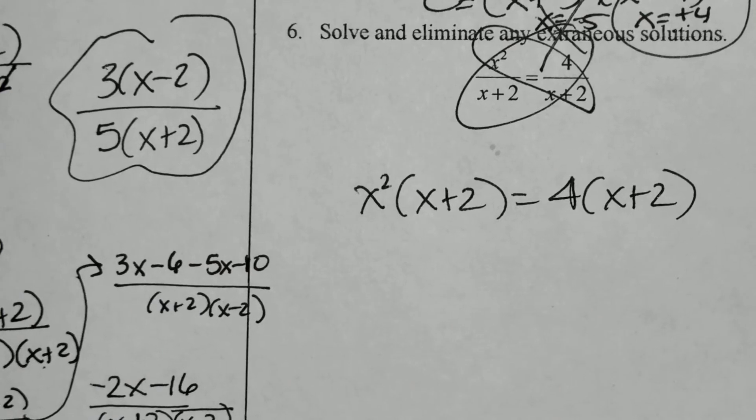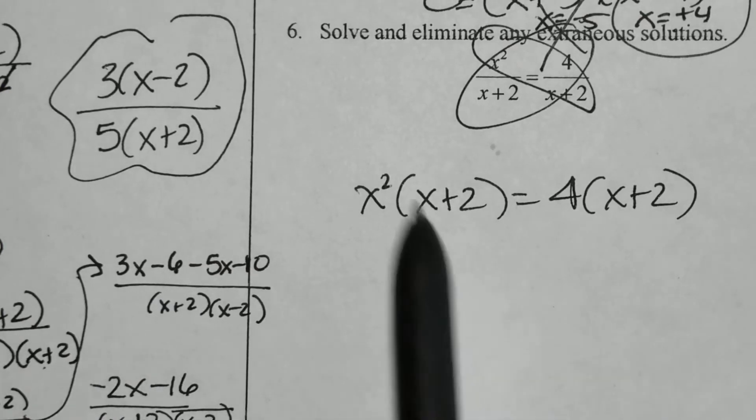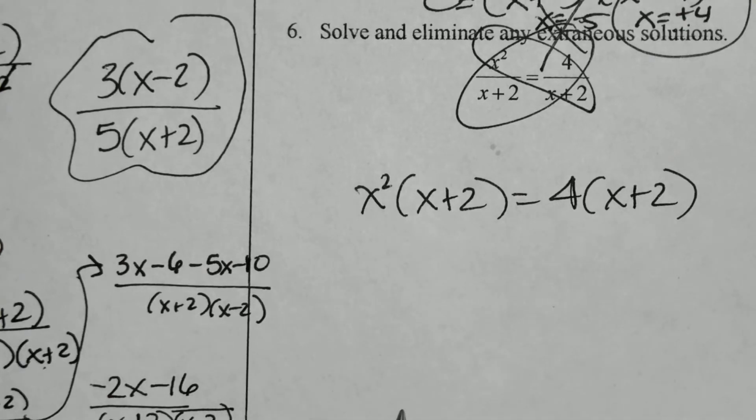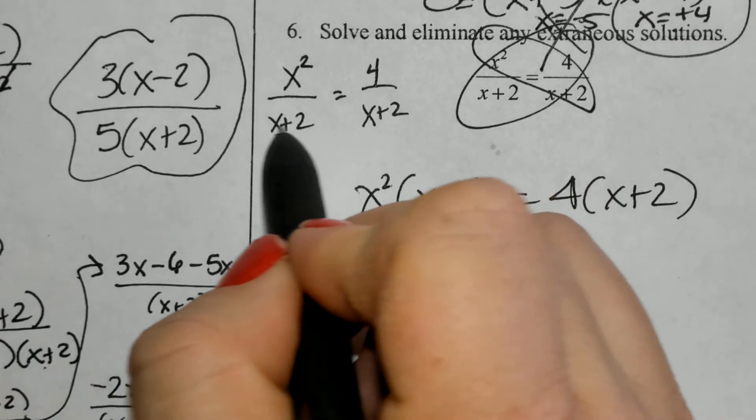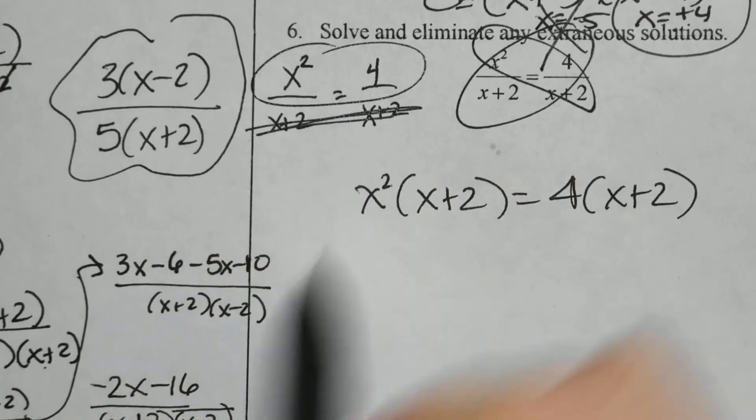You may recognize at this point, by the way, that this is one way, and you can distribute and solve, or others may have recognized with rational equations, the denominators are the same. You can just cancel the denominators and then solve the top.